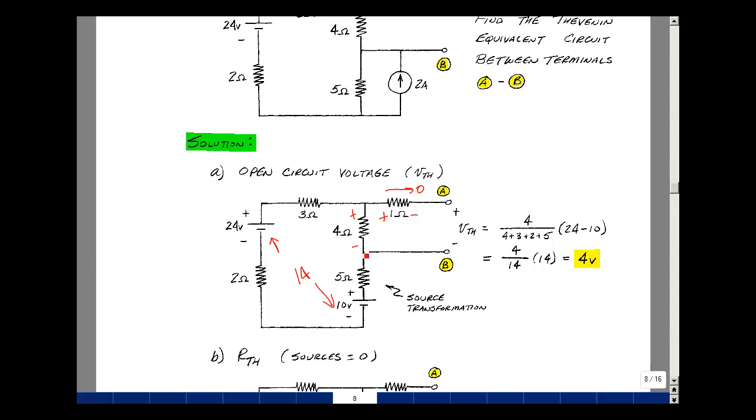So the drop would be 24, and then the drop would be minus 10. So these two together would give me effectively 14 volts. We're going to take the voltage across the 4 ohm resistor divided by the sum of all the resistances, which would be the 4 ohms, the 3 ohms, the 2 ohms, and the 5 ohms, and then multiply that by the difference of these two power supplies, which is 14 volts. And that turns out to be 4 volts.